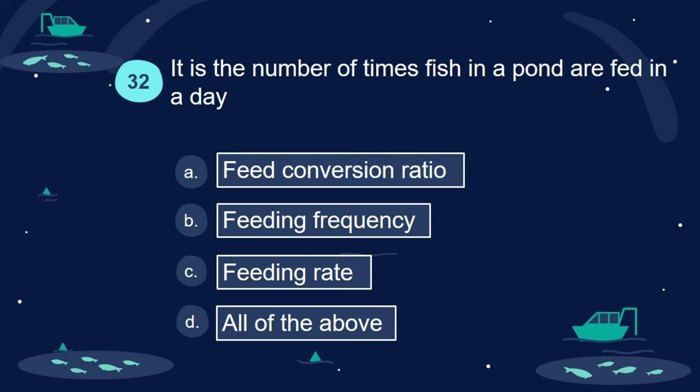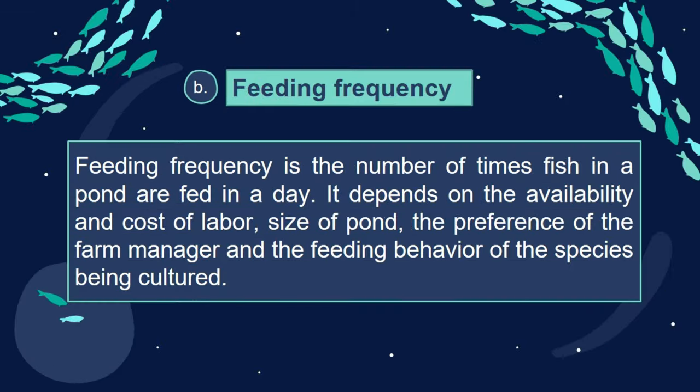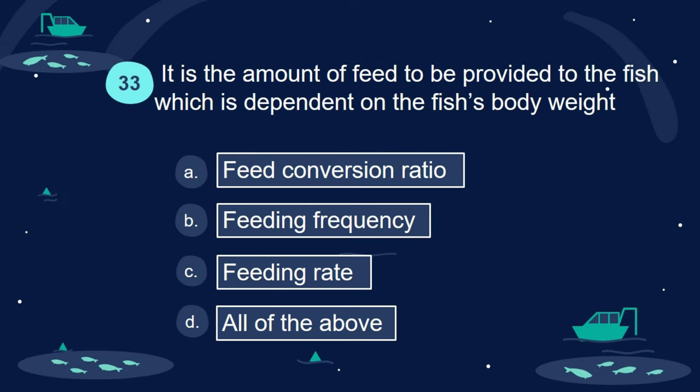Answer: B. Feeding frequency. Feeding frequency is the number of times fish in a pond are fed in a day. It depends on the availability and cost of labor, size of pond, the preference of the farm manager, and the feeding behavior of the species being cultured.